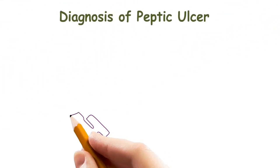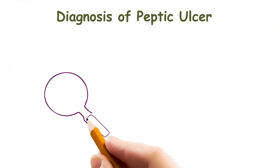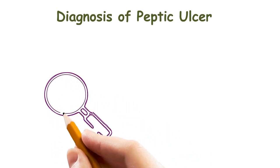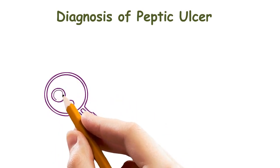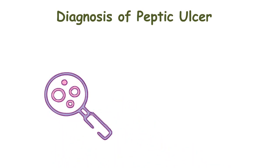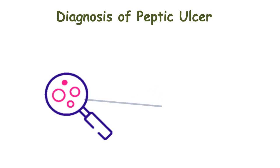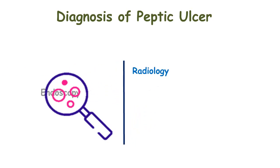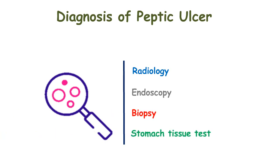Now moving to diagnosis of Peptic Ulcer. We have several methods that can be used for diagnosis and identification of Peptic Ulcer. These include radiology, endoscopy, biopsy, and stomach tissue tests.